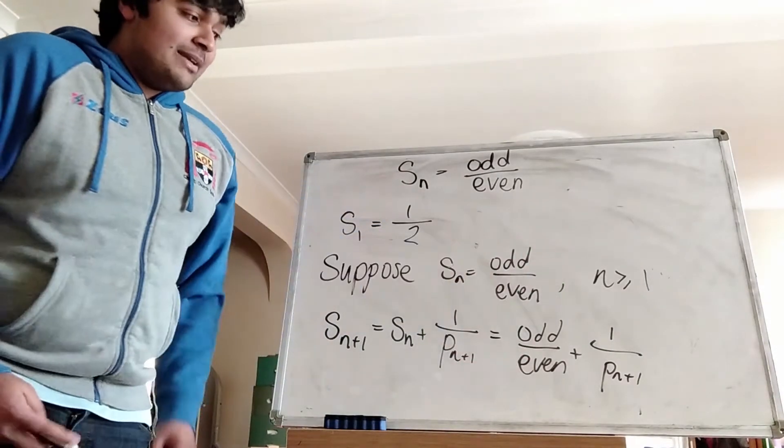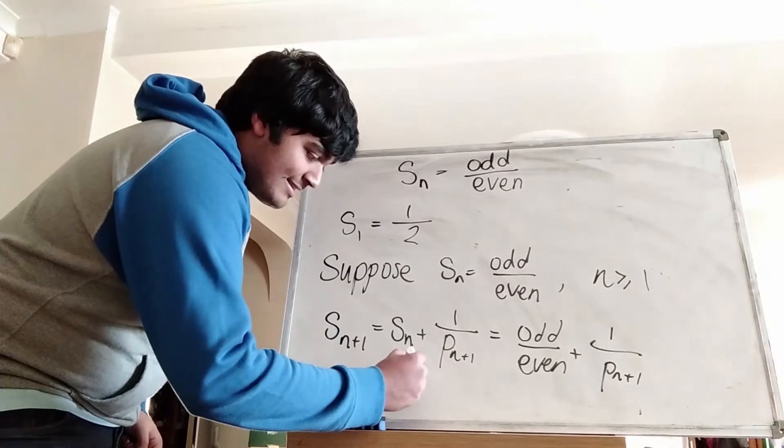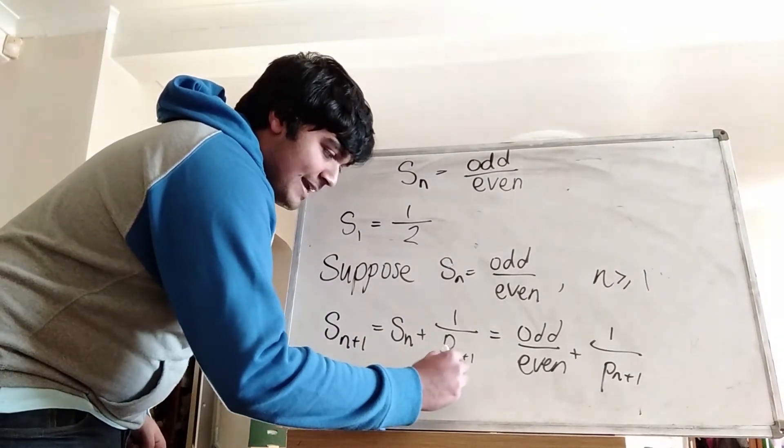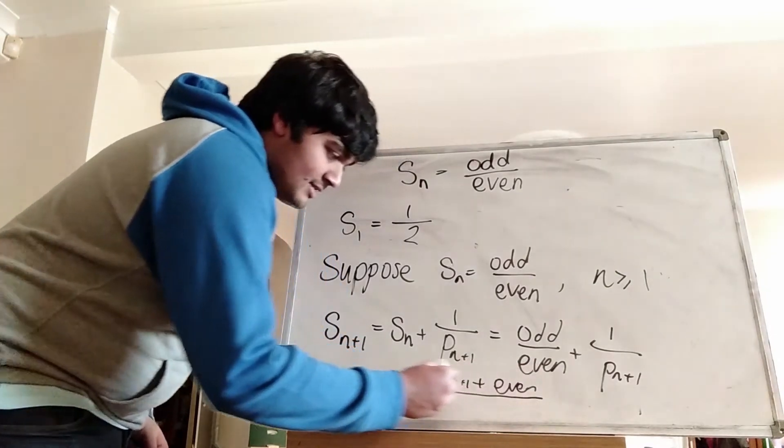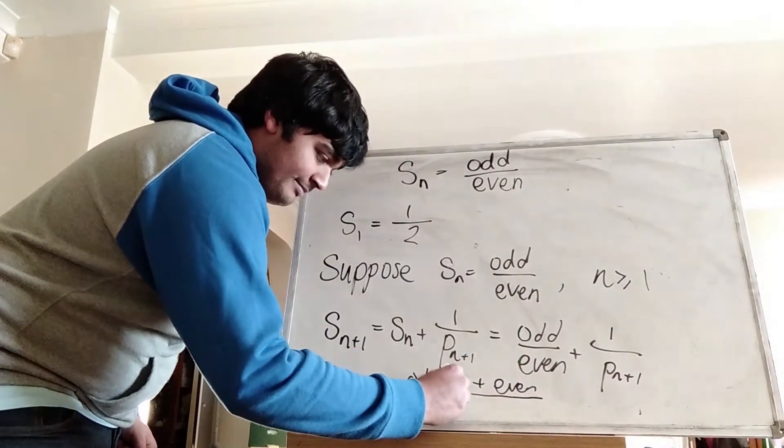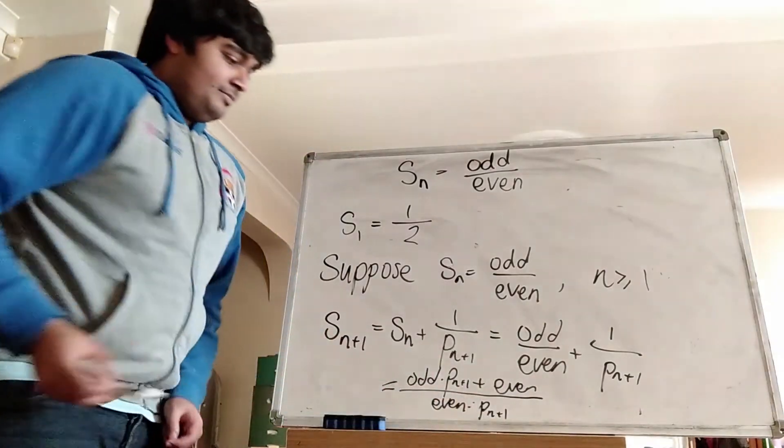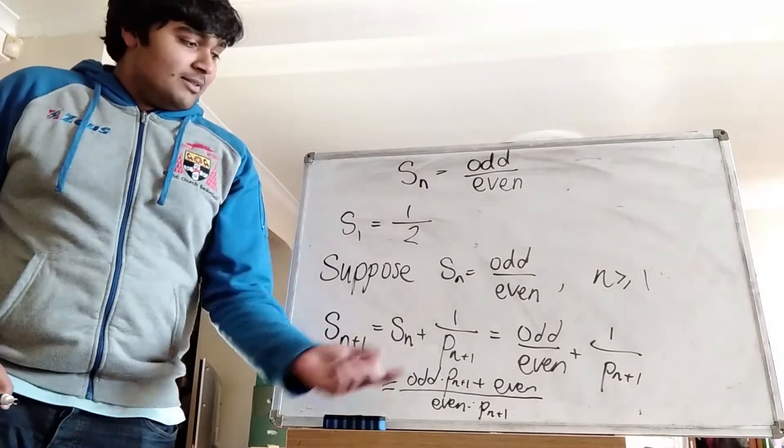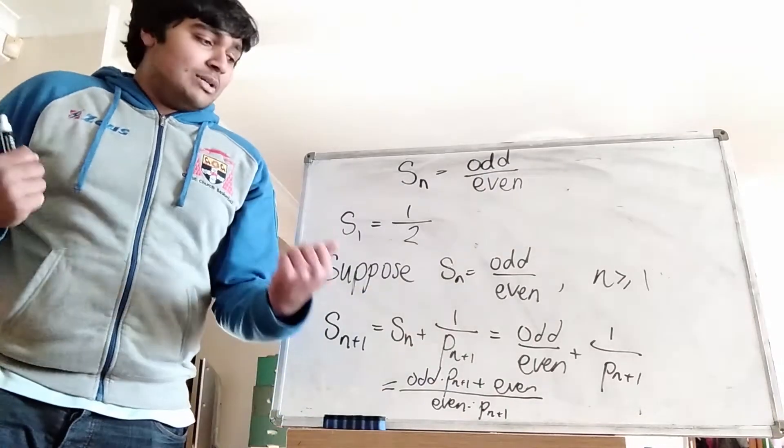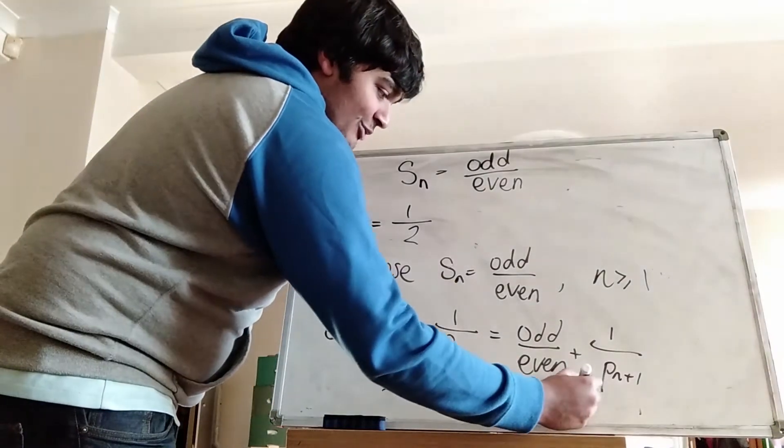Okay, so now what I'm going to do is simply cross multiply. So this thing here is odd times Pn plus 1 plus even divided by even times Pn plus 1. Odd times Pn plus 1, because Pn plus 1 is odd, we've got odd times odd, which is odd, plus an even number, that's still going to give us an odd. So we've got odd on the top.